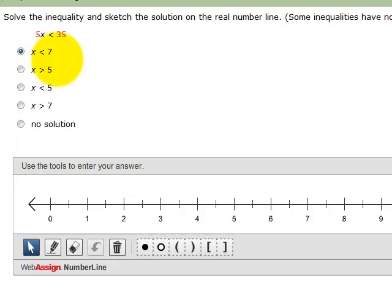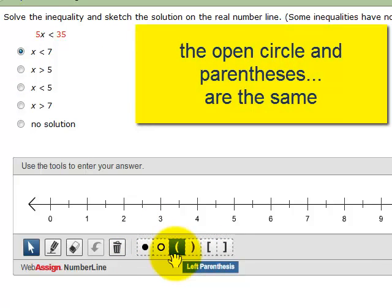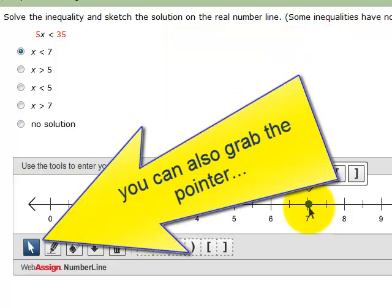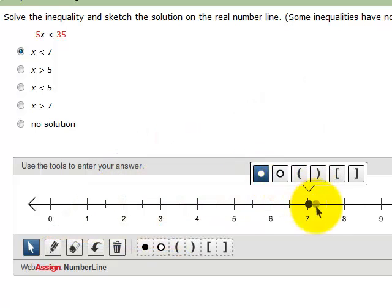How do I graph it in WebAssign? I have a choice. I can use an open dot or a parenthesis. So what I'm going to do is I'm going to grab the open circle, go to 7, and that's where I'm going to put it. Click. And then it even wants to know, again, which one do I want to use. So I'll say an open circle.